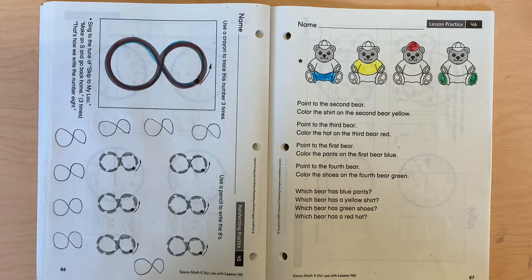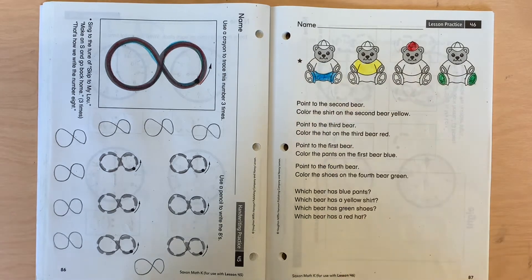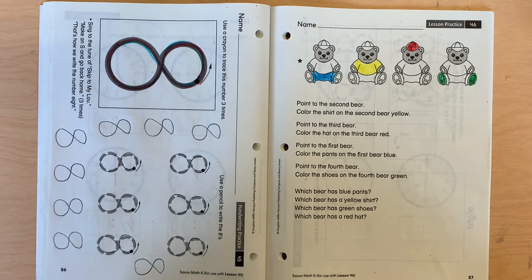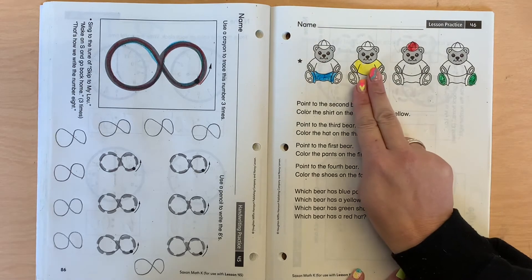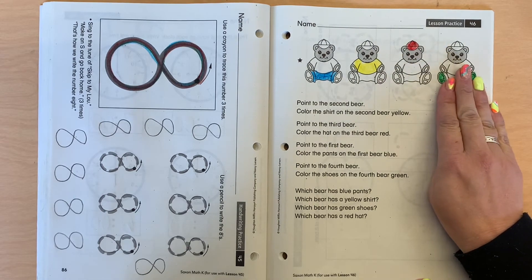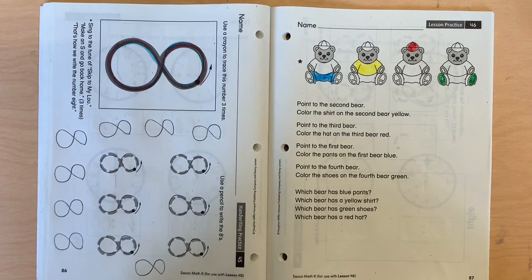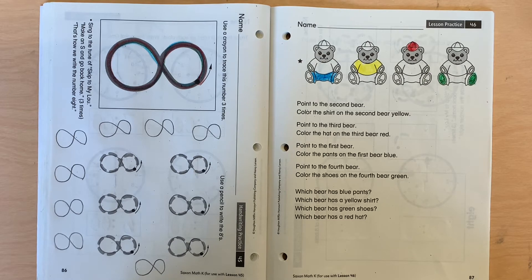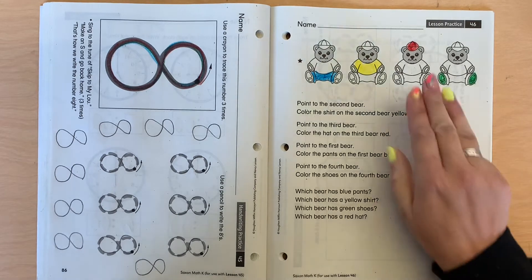Which bear has the blue pants? Is it the first, second, third, or fourth? Tell me using the ordinal number. Who has the blue pants? You should have said first. Who has the yellow shirt? You should have said second. Who has the green shoes? You should have said fourth. And who has a red hat? You should have said third.